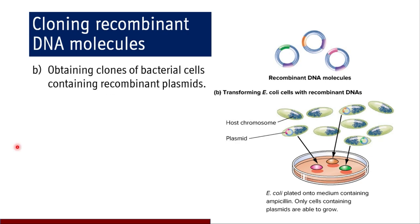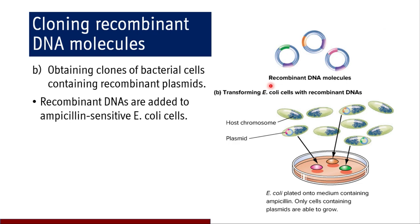We then obtain clones of bacterial cells containing recombinant plasmids. The recombinant DNAs are added to ampicillin-sensitive E. coli cells. Since the gene responsible for ampicillin resistance has been incorporated into the bacterial plasmid, the recombinant DNA molecules are added to a mixture of ampicillin-sensitive cells grown in a medium containing ampicillin. Cells which have incorporated the recombinant DNA plasmid will produce proteins responsible for ampicillin resistance, while cells which have not received the recombinant DNA will not grow and will die because the medium contains the ampicillin antibiotic. Only cells with the ampicillin resistance gene through recombinant DNA will grow.